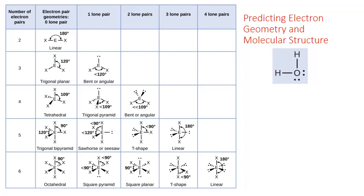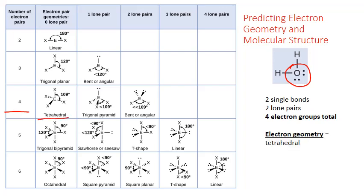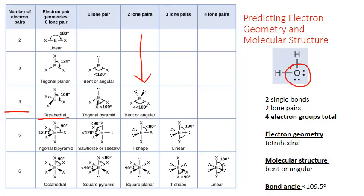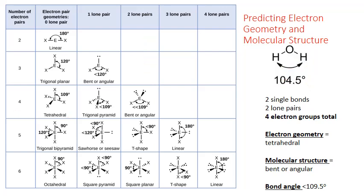Let's look at another example — water. Oxygen is our central atom. There are two single bonds coming off of that oxygen and two lone pairs, so that's four electron groups total, corresponding to the tetrahedral electron geometry row. With approximately 109-degree bond angles, though probably less, the two lone pairs correspond to a bent or angular molecular shape. The actual bond angle is more like 104.5 degrees — not a 90-degree angle, but certainly less than 120.